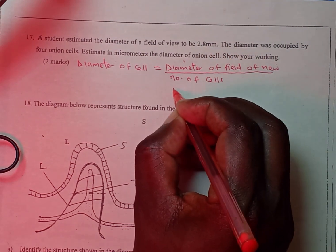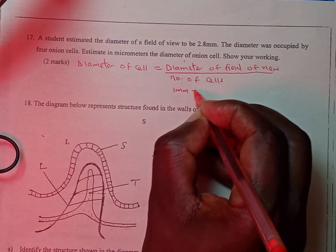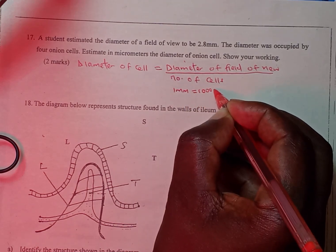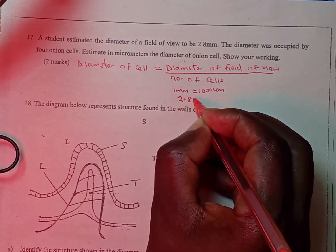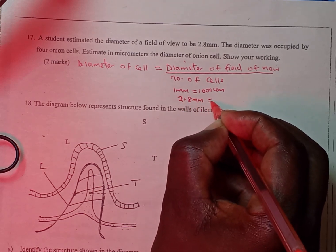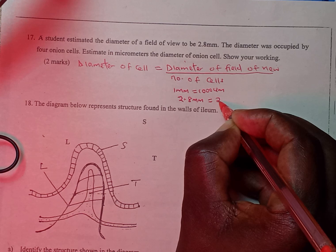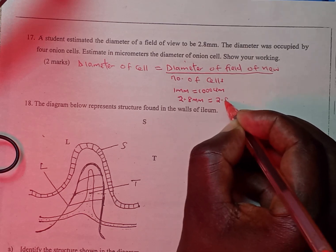We know that 1 millimeter is equivalent to 1000 micrometers, and therefore 2.8 millimeters will be equivalent to 2.8 multiplied by 1000,